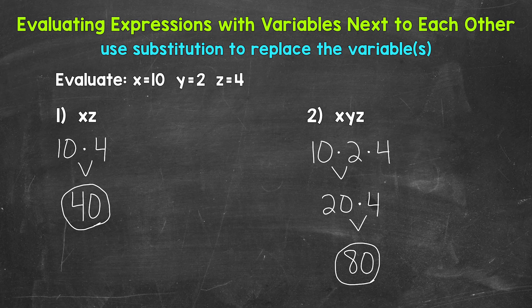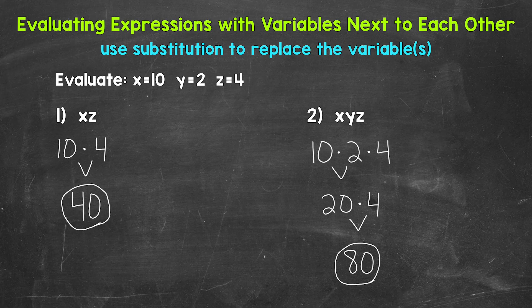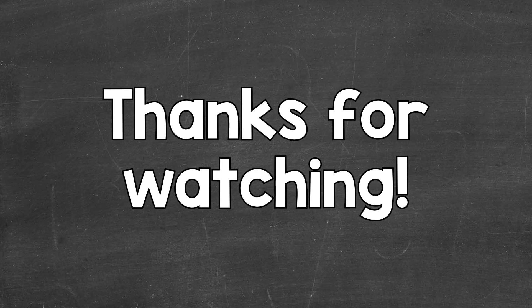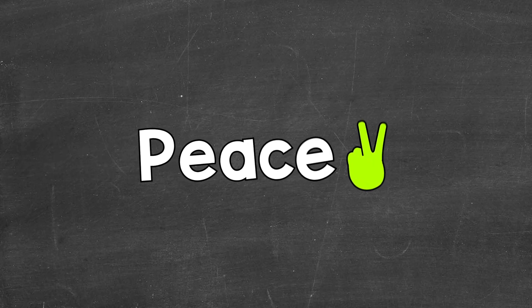So there you have it. There's how you evaluate expressions with variables next to each other. Just remember, variables next to each other, or a number next to a variable, shows that they are being multiplied. So it's multiplication. I hope that helped. Thanks so much for watching. Until next time, peace.